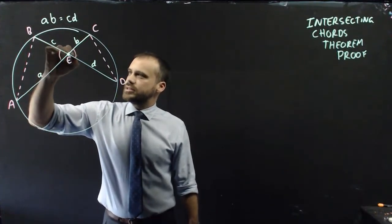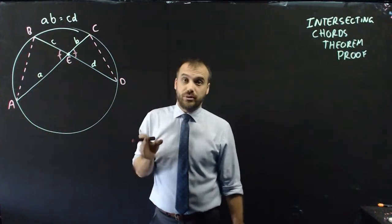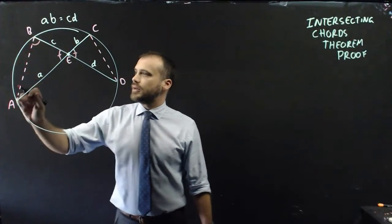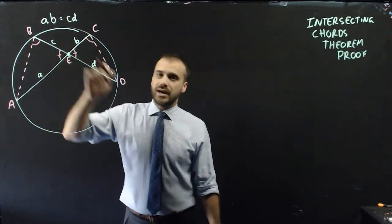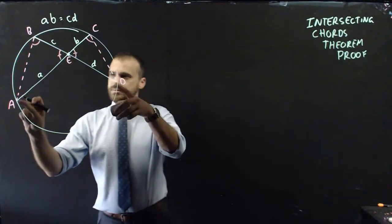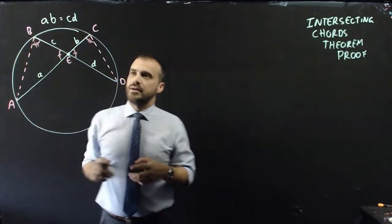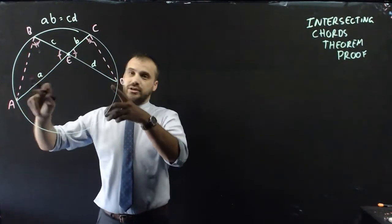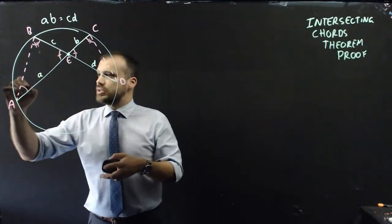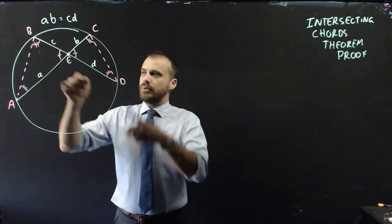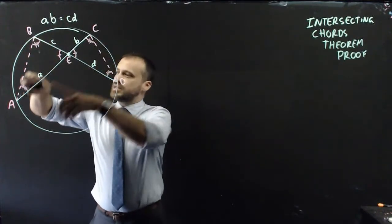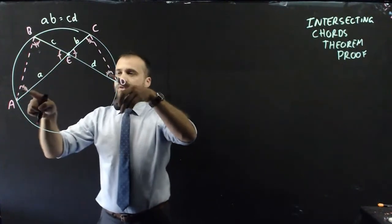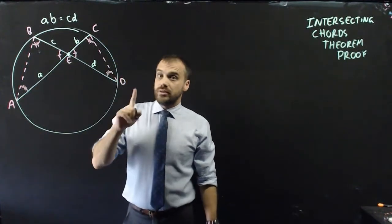This angle here and this angle here are the same because they're vertically opposite. What about this angle? Those angles are the same because they're subtended off the same arc. We can also say this angle is subtended off arc BC, and this angle is subtended off arc BC — therefore this angle and this angle are the same. They're similar triangles by the angle-angle-angle rule.